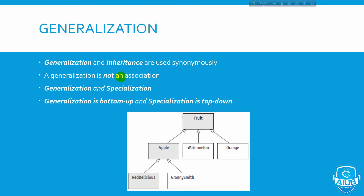Generalization. In general, you can see that this represents inheritance. In a parent class and sub-class relationship, the child class inherits from the parent class. For example, the parent class is 'Fruit', and the child classes are apple and watermelon. The parent class attributes include red and delicious greens.